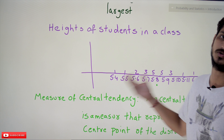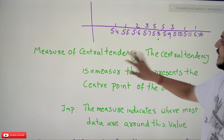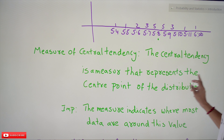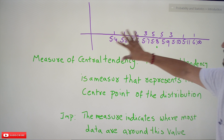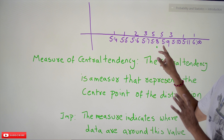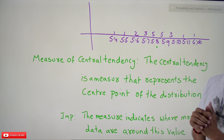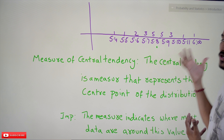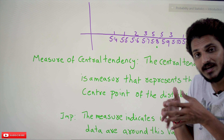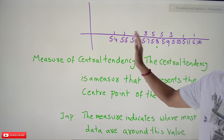Now coming to the point — what does measure of central tendency mean? Central tendency is a measure that represents the center point of the distribution. In this distribution, the center point is somewhere around here — not exactly the center point, but somewhere around here we will get it. Based on the distribution we have to identify the center point — that is what measure of central tendency means. From this point, half of the students are on the left and half are on the right.